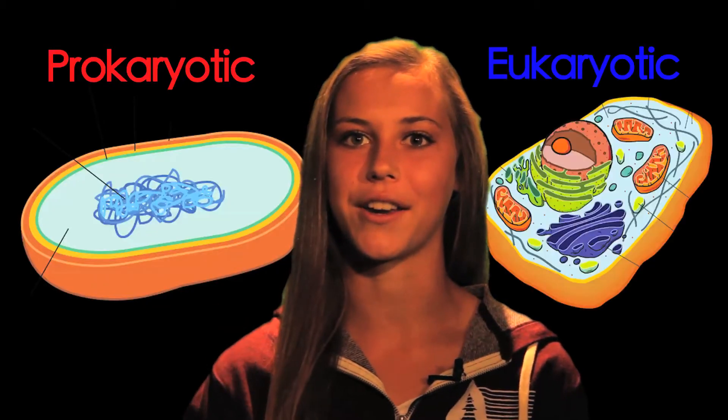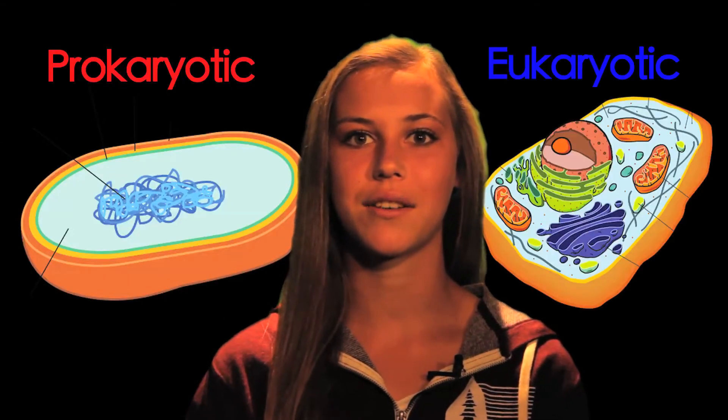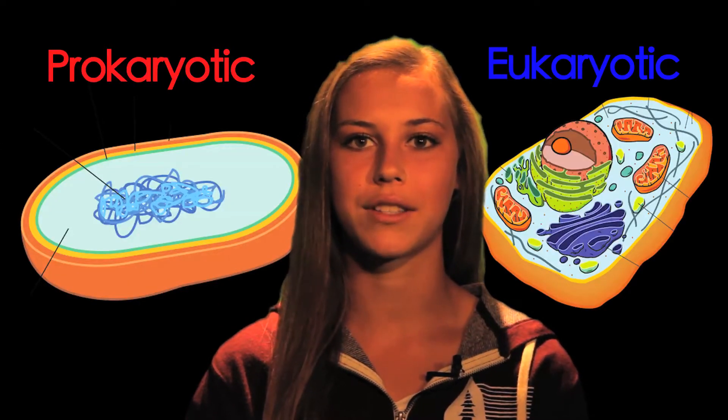Cells are the fundamental units of existence. From bacteria to elephants, all living things are made of cells. They are classified into two different types: prokaryotic and eukaryotic. These cells differ in what resides within them.